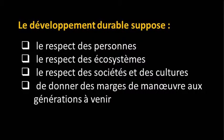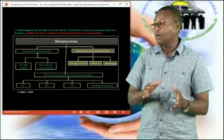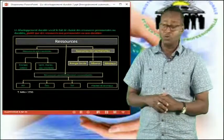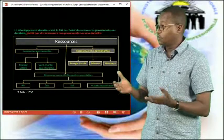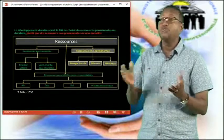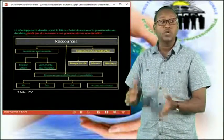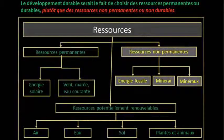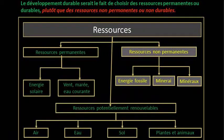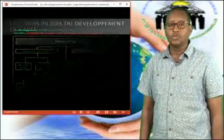Nous allons voir un tableau qui nous montre les ressources permanentes, donc les ressources durables, mais aussi les ressources non permanentes. Ce qui veut dire que nous devons privilégier les ressources permanentes au détriment des ressources non permanentes. Par exemple, utiliser plus d'énergie solaire au détriment des énergies fossiles afin de préserver la planète pour les générations futures. Les ressources renouvelables sont l'air, l'eau, le sol, ainsi que les plantes et les animaux.